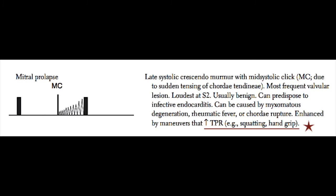The most common cause of mitral prolapse is myxomatous or Barlow's degeneration of the valve, which is generally caused by thickening of the mitral valve. It can also be caused by rheumatic fever, which is less common these days, or chordae rupture in the setting of acute myocardial infarction. The mitral prolapse murmur is enhanced by maneuvers that increase total peripheral resistance, such as squatting or hand grip exercises.